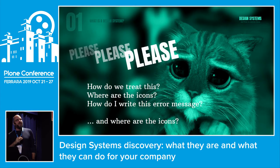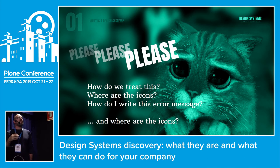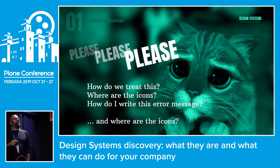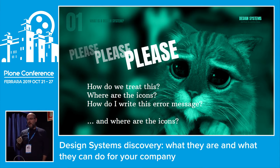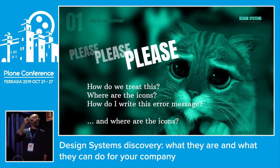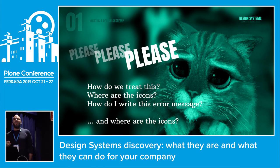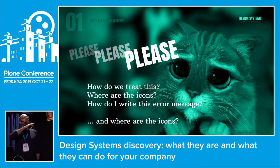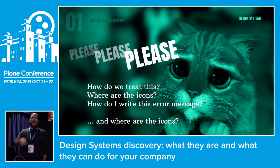I'm sure you've lived this situation so many times. You're working on something, reaching a page you have to treat somehow. There's a search box and you say, how do I treat this? Where do I find the icons? Or there is an error message — how do I write it? What tone do I use? What graphic do I use? You've solved these problems millions of times, but you're trying to solve them again every time.